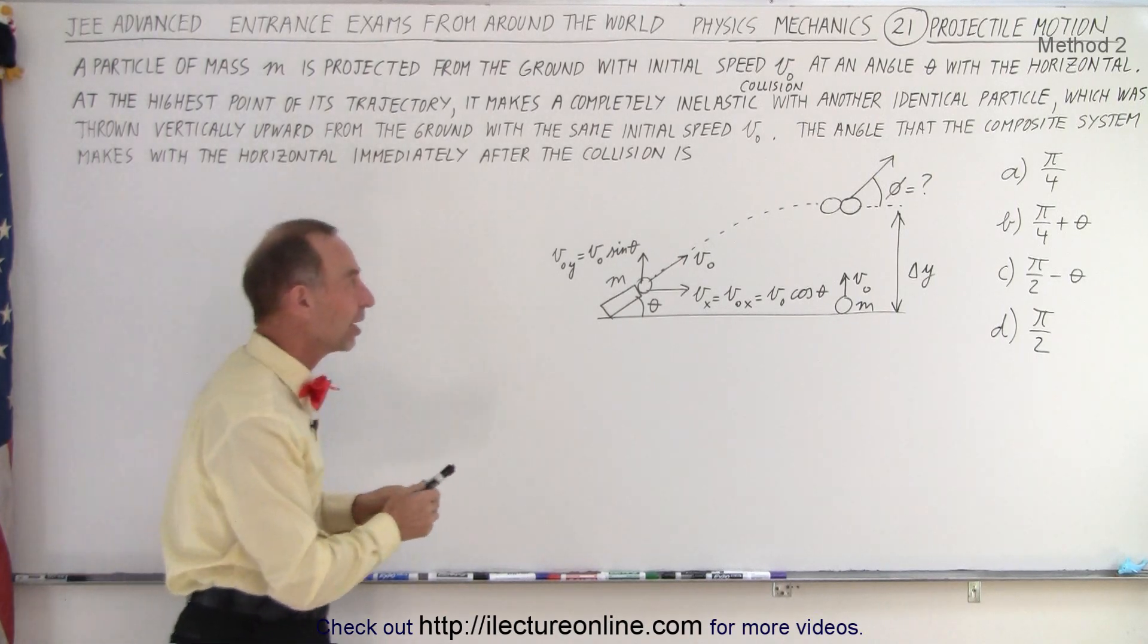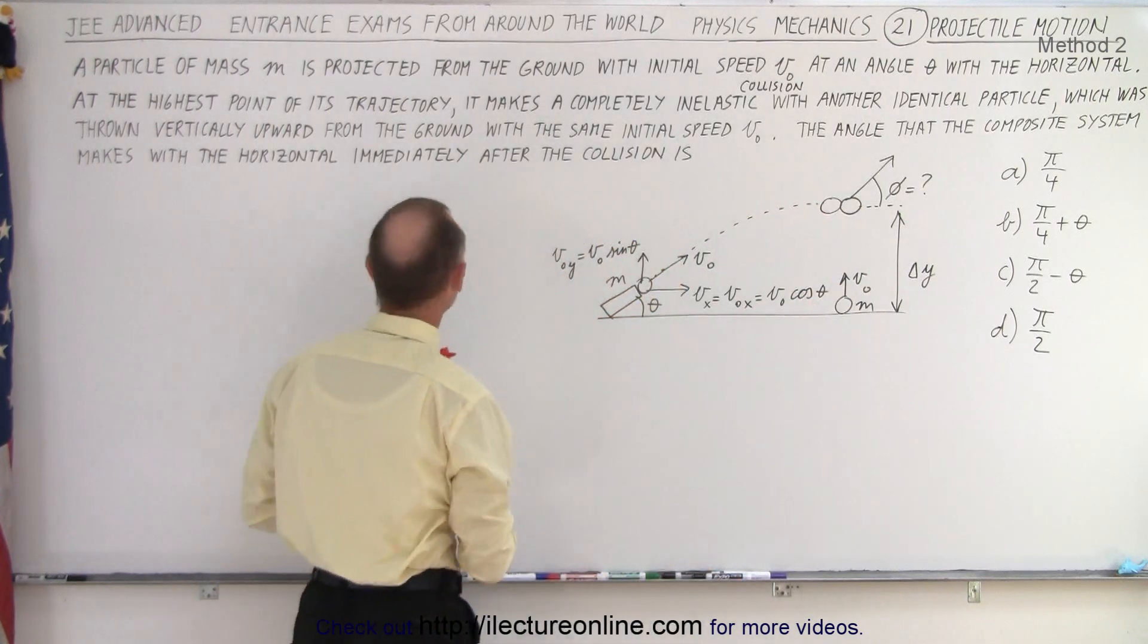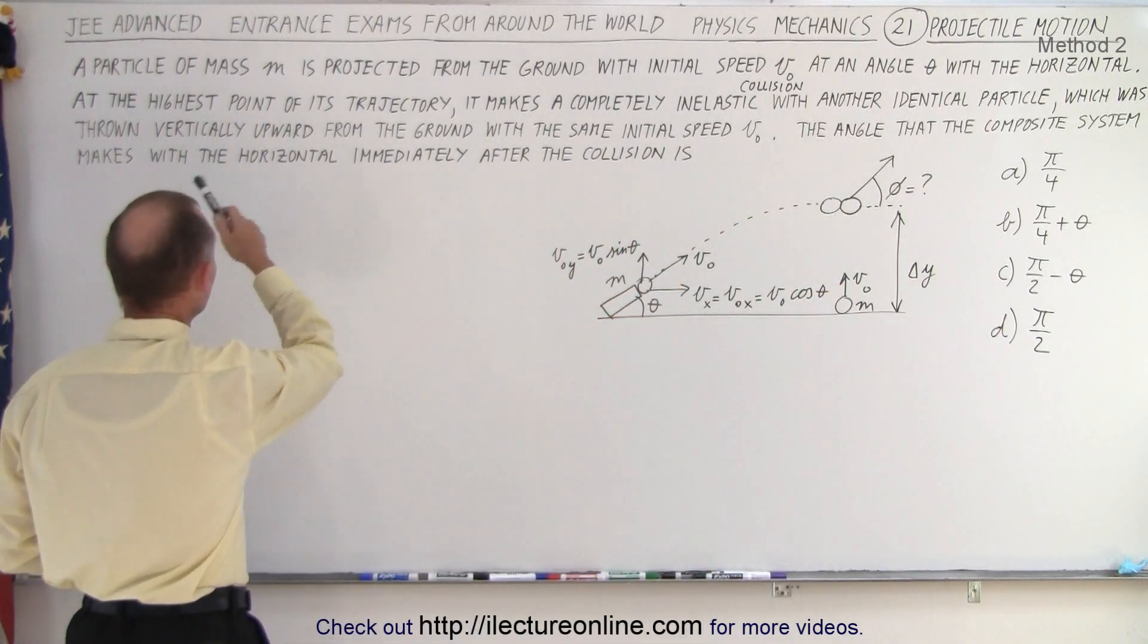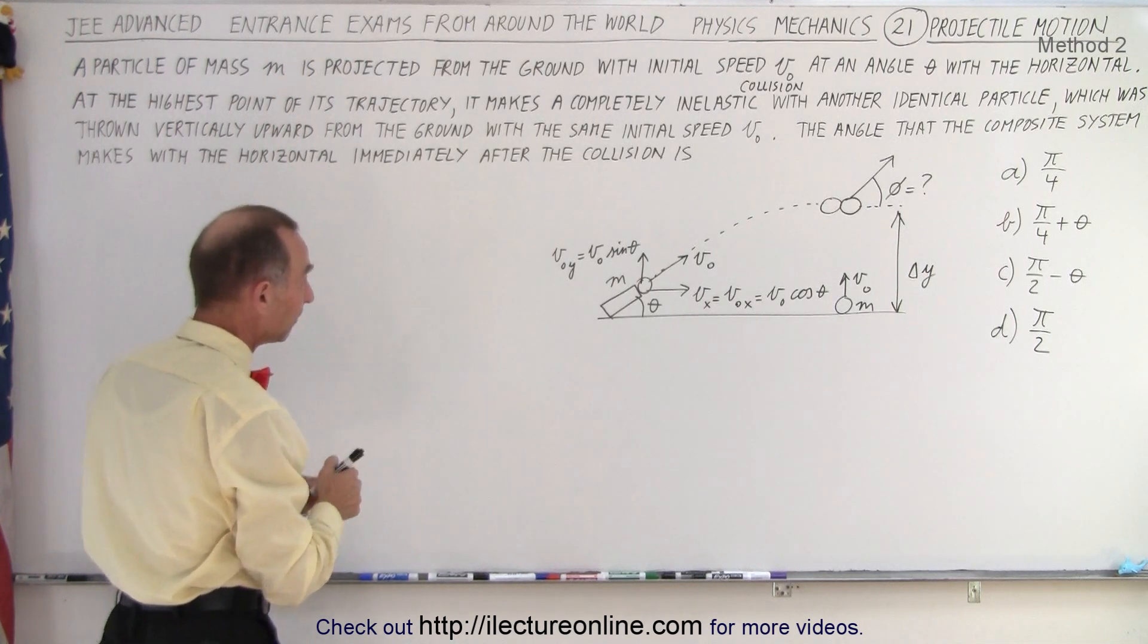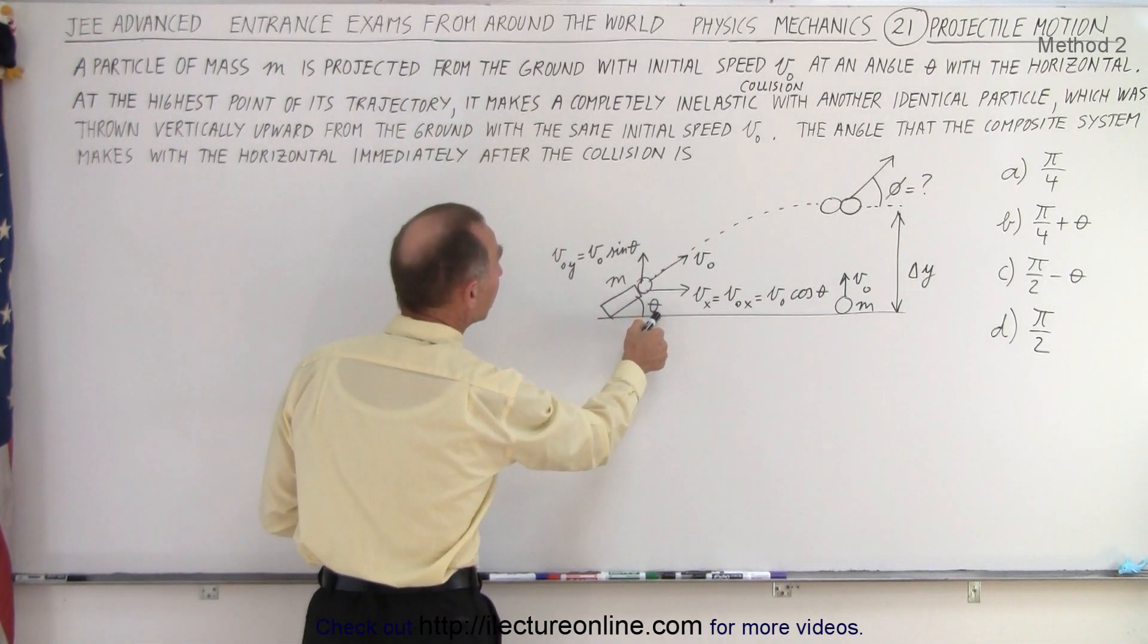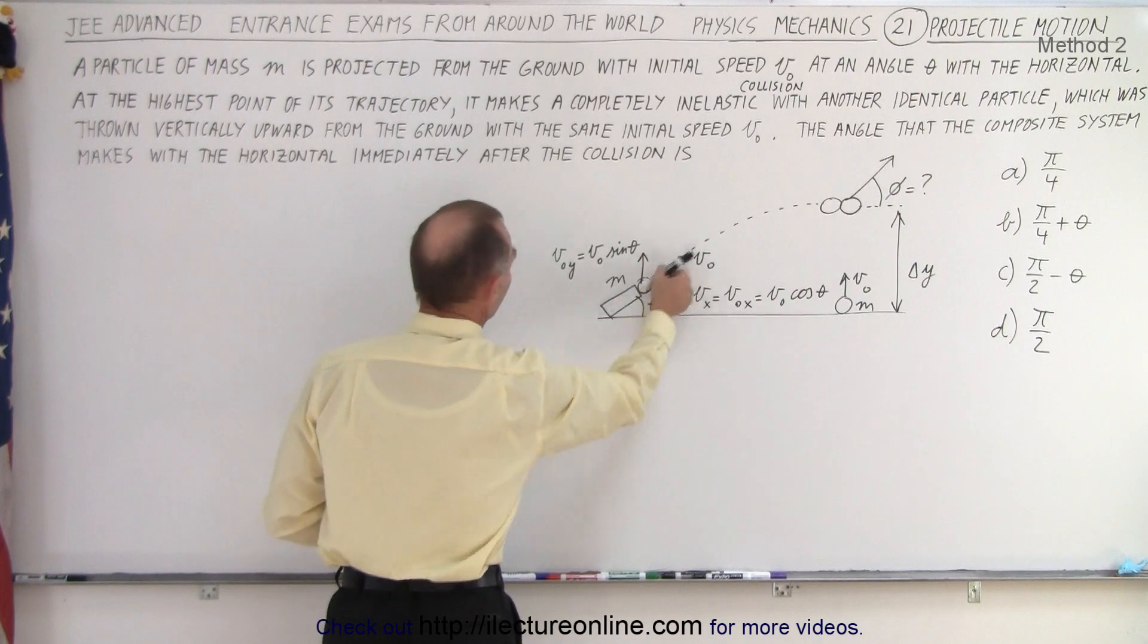But the magnitude of their velocities when they hit will be the same. Remember, the problem says a particle of mass m is projected from the ground with initial speed v sub nought at an angle theta with the horizontal. So that's our first particle.